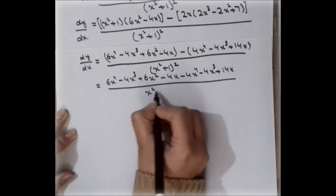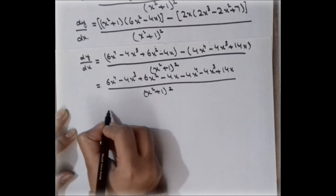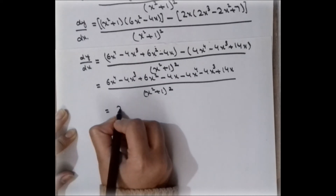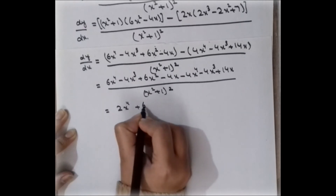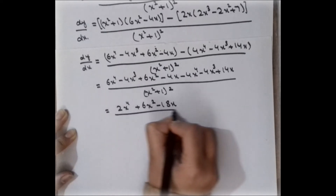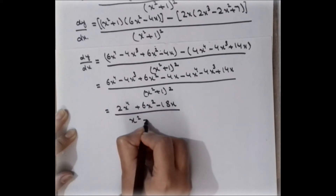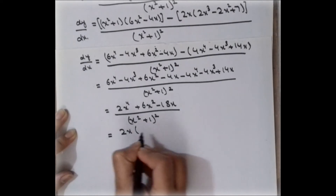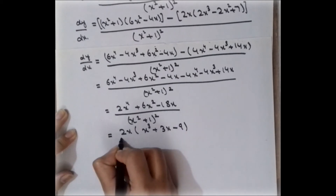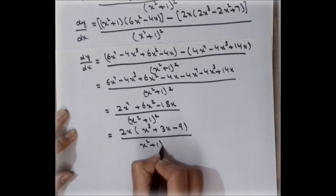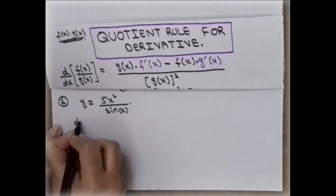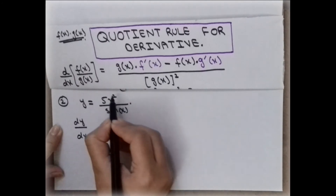Simplifying these two terms: combining like terms gives 2x to the fourth plus 6x squared minus 18x, divided by (x squared plus 1) squared. Taking 2x as a common factor: 2x times (x cubed plus 3x minus 9), divided by (x squared plus 1) squared. This is the final answer for dy over dx.